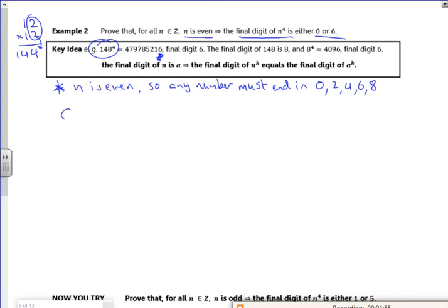So if I look at zero to the power four, that's zero. So that's okay, zero or six. Let's have a look at two to the power four. So two, four, eight, 16. Well, 16 is the end digit. So that's okay.